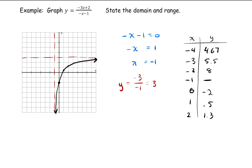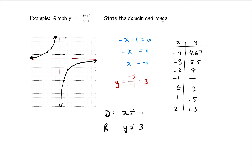For the other branch: x equals negative 2 was up at y equals 8 — that's the very top of the graph. Negative 3 was at 5.5, and negative 4 at 4.67. We'll sketch in the rest of the curve, giving us our two branches. The domain: x does not equal negative 1. The range: y does not equal 3. Hopefully that covers it — if you have any questions, reach out and let me know, and we'll keep going with practice. Cheers.